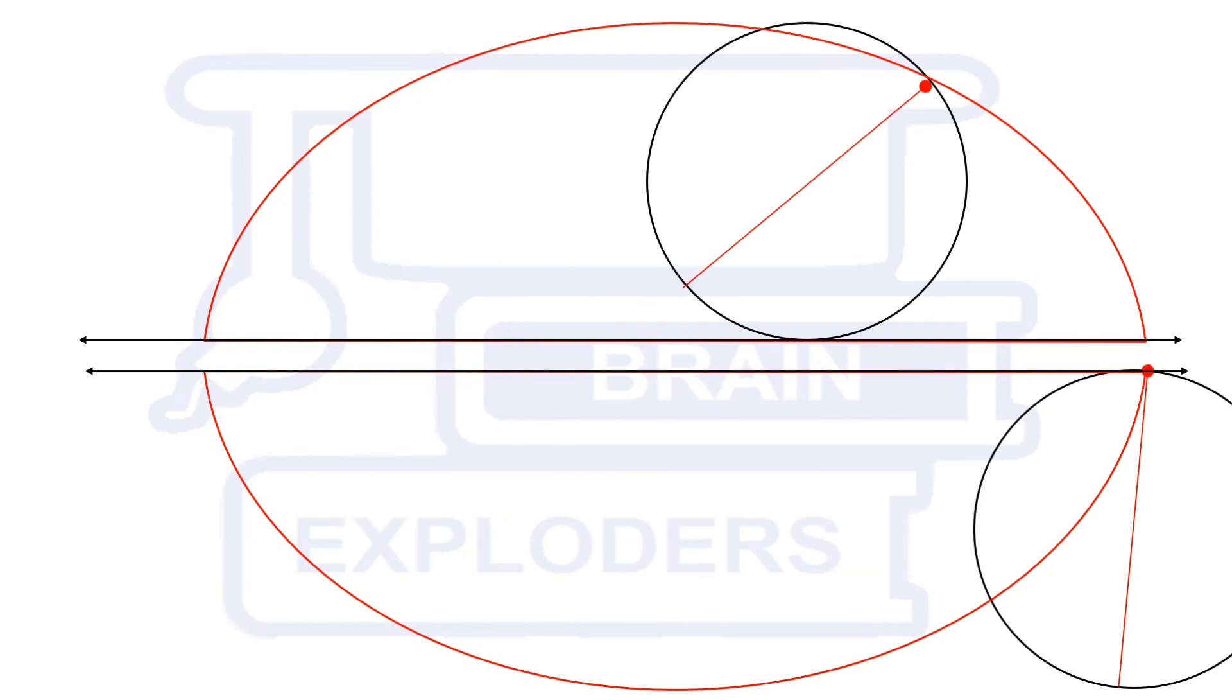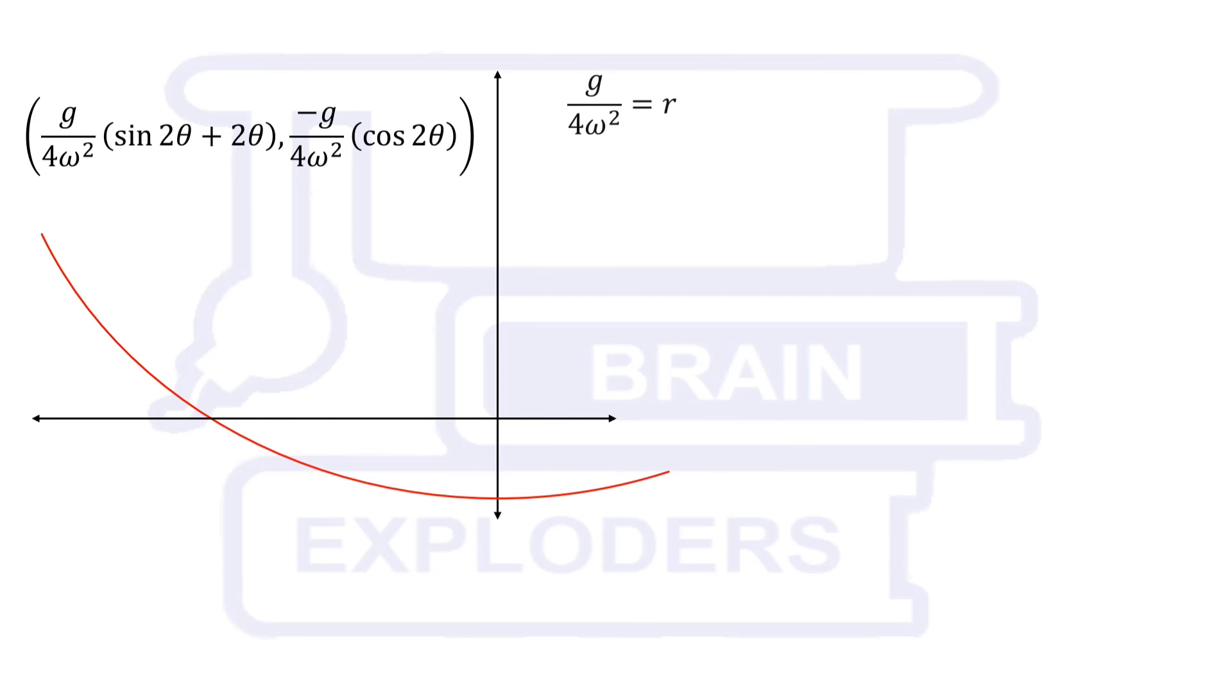In this parametric equation of cycloid, radius of the circle which generates this cycloid is g over 4 omega squared. This implies that 1 over 2 omega is equal to square root r over g.